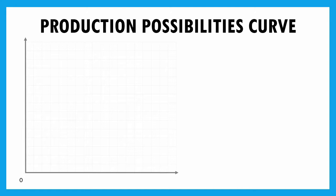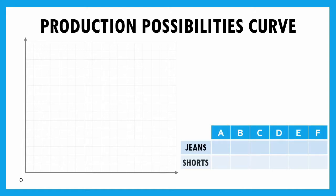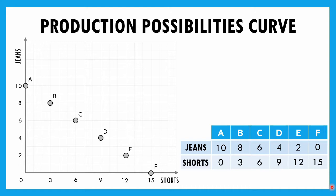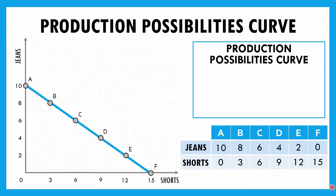Now let's look at the actual model — the production possibilities curve. The name already tells us what it shows: our different possible points of production. Let's say we're going to produce either jeans or shorts. If we put all our focus toward jeans, we could produce 10 pairs of jeans but no shorts. If we put all our focus on shorts, we could make 15 pairs of shorts but no jeans. We have options in between. We put jeans on the y-axis and shorts on the x-axis, plot out points A, B, C, D, E, and F, and when we connect those dots, we get our production possibilities curve — the line showing all different production points we might operate at.